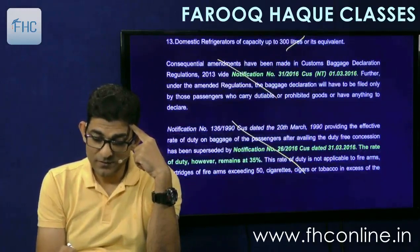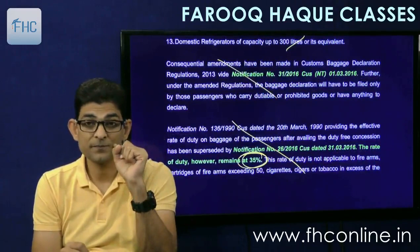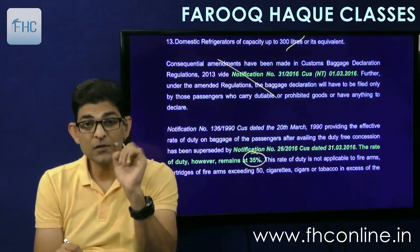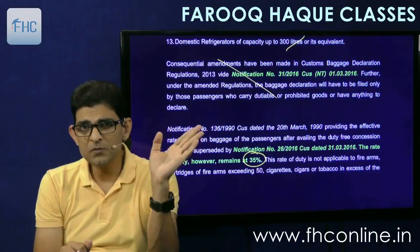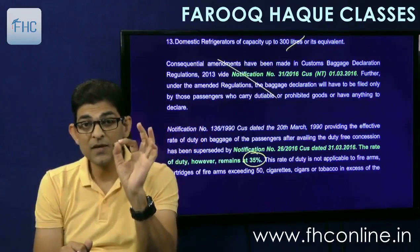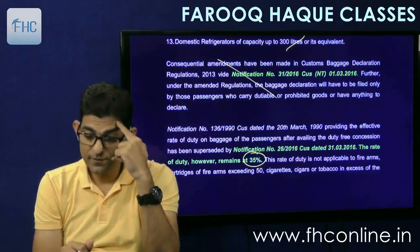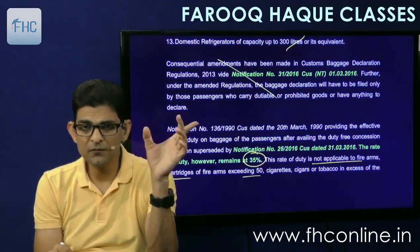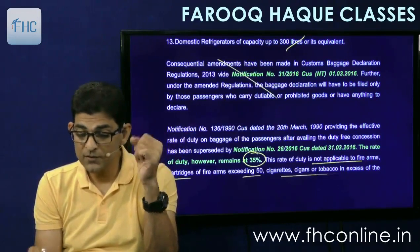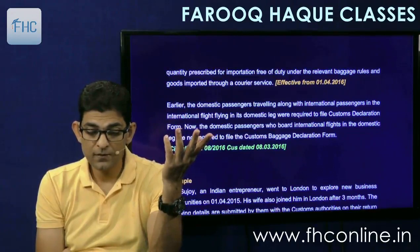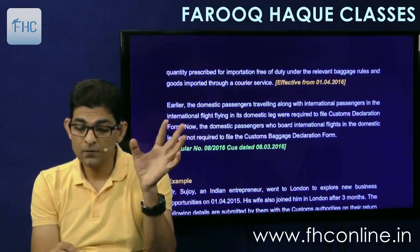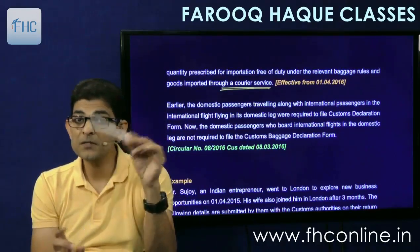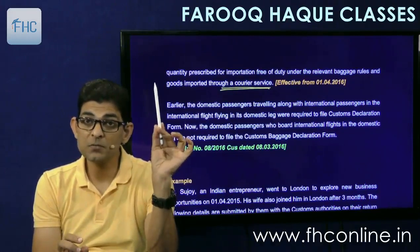The rate of baggage duty is 35 percent flat rate. After allowing the exemptions, whatever amount remains is taxed at 35 percent. However, this rate is not applicable to firearms, cartridges of firearms exceeding 50, and cigarettes, cigars, and tobacco in excess of prescribed limits — these are taxed differently. Also, goods imported through courier service are not subject to this 35 percent rate; they are taxable at normal rates applicable under the Customs Tariff Act.